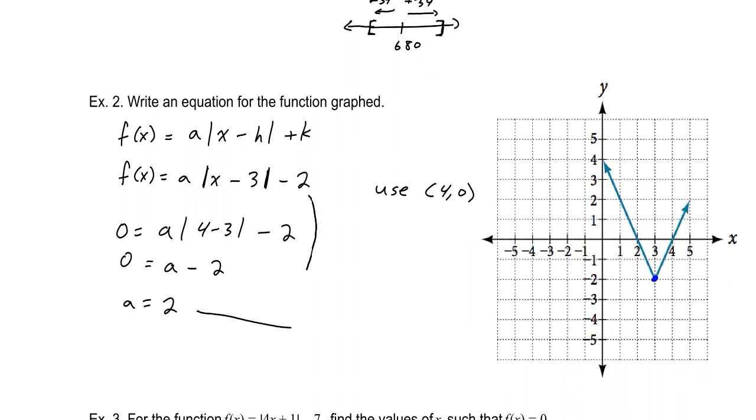Pairing that with that equation that we had in that form, our function is f(x) equals 2 times the absolute value of x minus 3, minus 2. And there we have the equation for that graph.